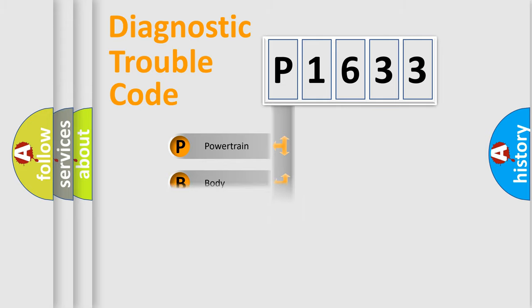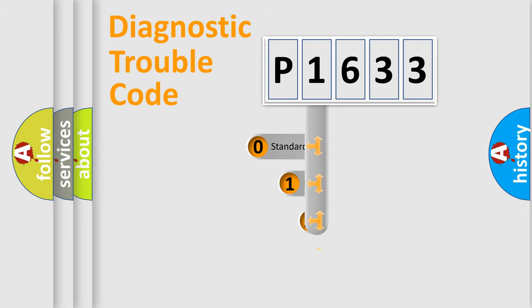Powertrain, body, chassis, network. This distribution is defined in the first character code.